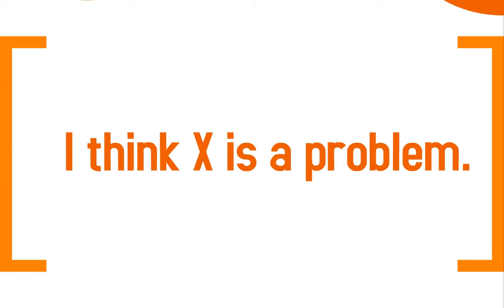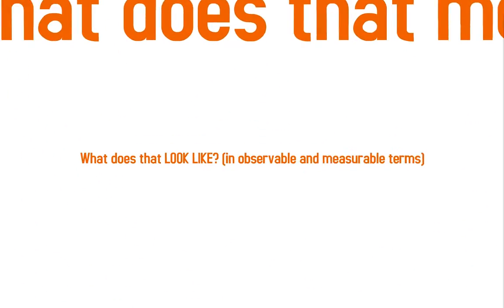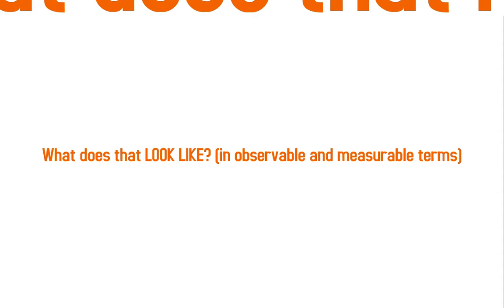We start with a problem. You need to, as a student, identify what you think is the problem — so, 'I think X is a problem.' In your proposal, you start by outlining what that means. What does that problem look like? I'd like you to describe it using observable, measurable terms.